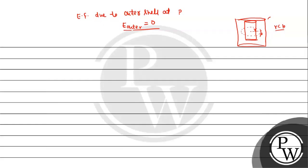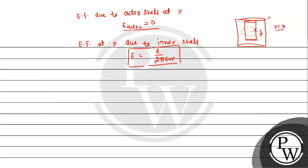The electric field at point P due to the inner cell is E = λ / (2πε₀r). Since the inner cylinder has charge density minus lambda, the electric field points towards the center of the cylinder.